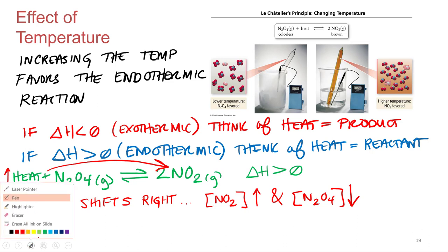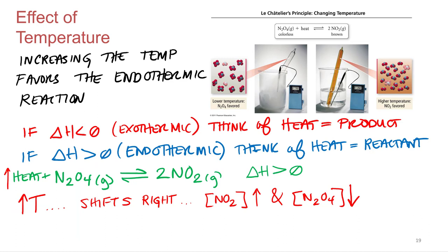Now let's think about what would happen if we decrease the temperature. We're effectively pulling down the concentration of the reactant. That's going to decrease the rate of the forward reaction — fewer reactant molecules bumping into each other — making the reverse reaction rate relatively bigger. So we would say the equilibrium shifts to the left.